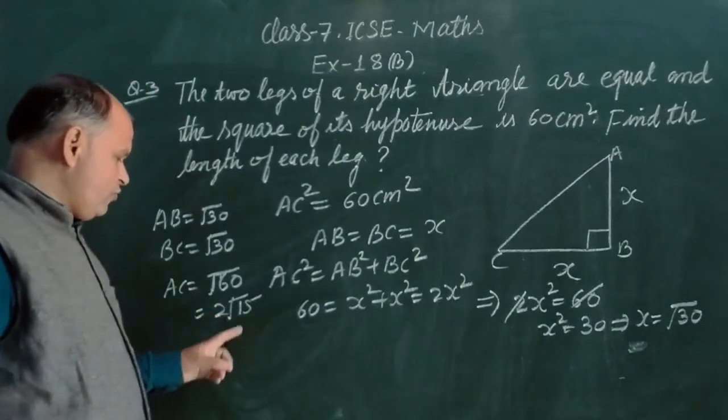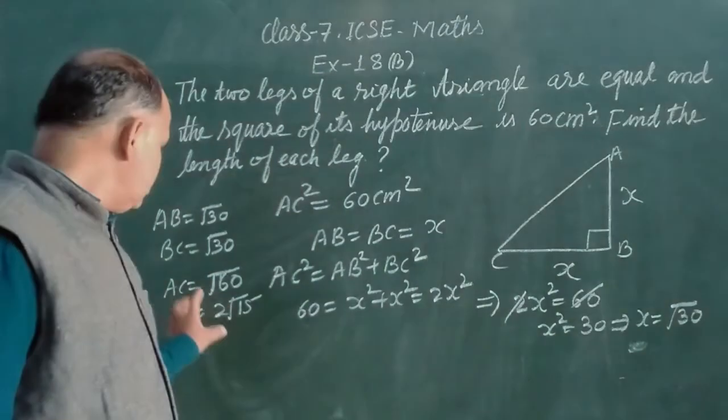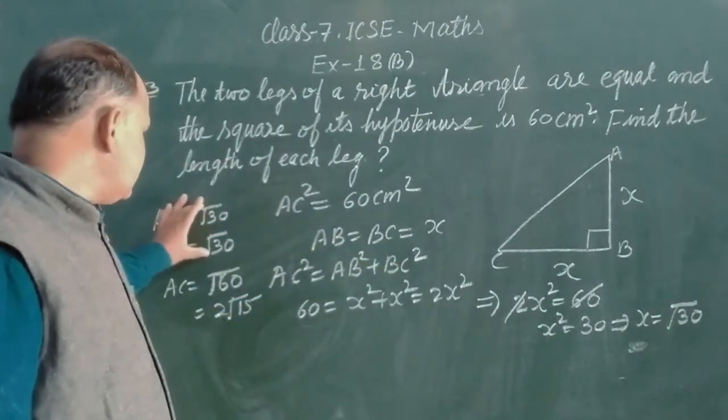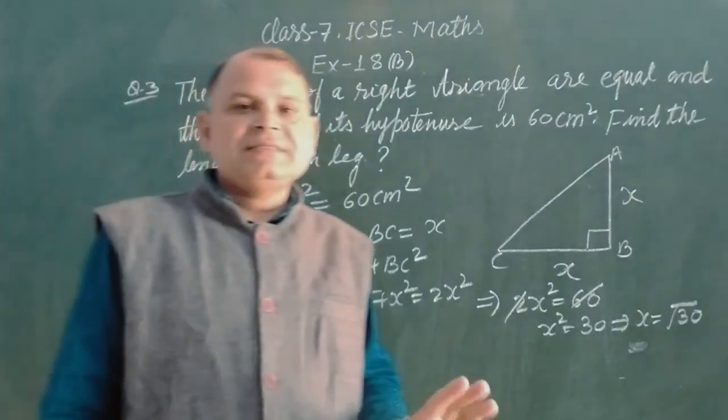So this is 2 root 15, because we write 60 as 4 into 15, so 4 comes out with 2, because 2 square is 4. So these sides or legs are root 30, root 30, and root 60.